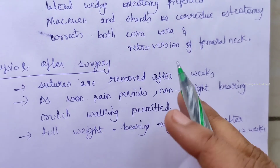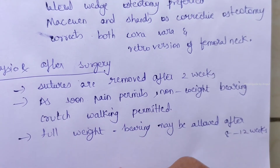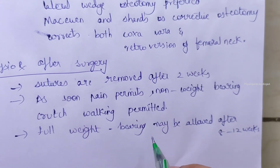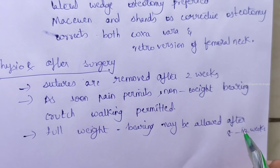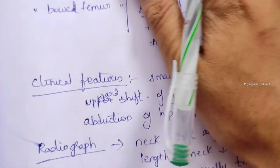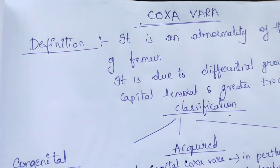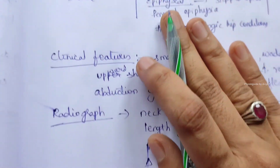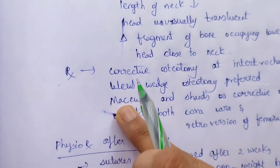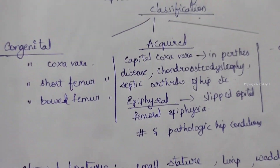After non-weight bearing crutch walking, full weight bearing is progressively introduced. Full weight bearing may be allowed after 8 to 12 weeks. This concludes the brief overview of coxa vara, covering its definition, classification, clinical features, radiography, surgical treatment, and physiotherapy management.